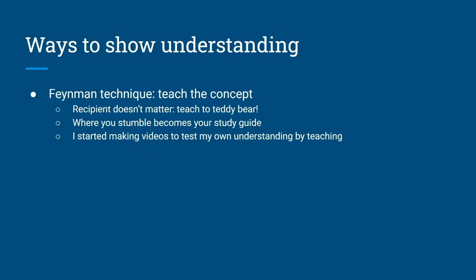Once you've read a section and done the problems, you'll want to know whether you've absorbed it well, whether you understand it. One way to check your understanding is called the Feynman technique, and in short, this is to teach the concept in your own words as simply as possible. The recipient does not matter. You can teach to a teddy bear, a rubber ducky, a recording camera to make videos. The key is that you're trying to explain this simply. Wherever you stumble, this becomes your study guide.